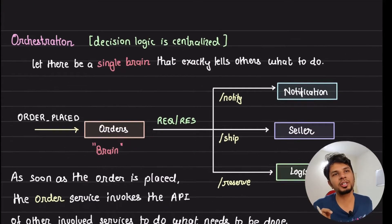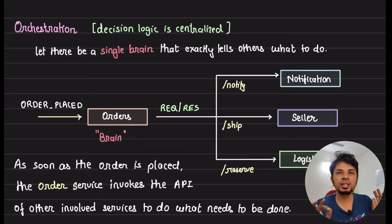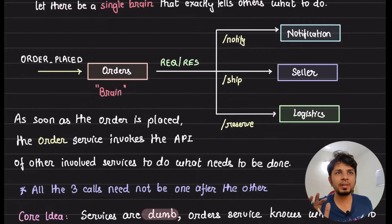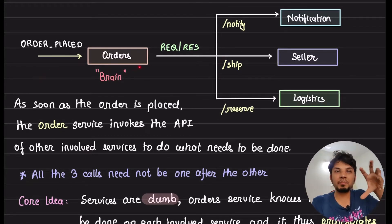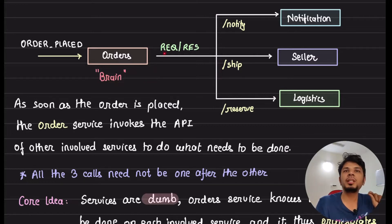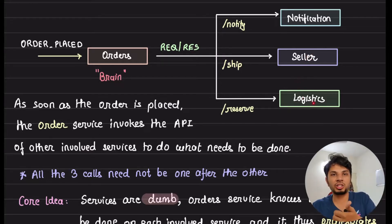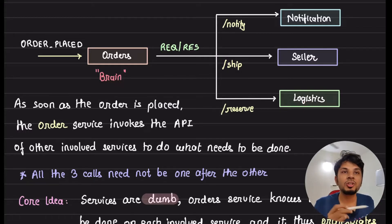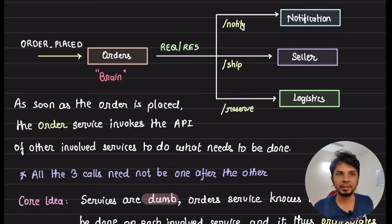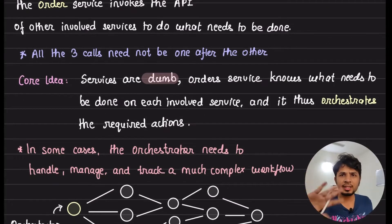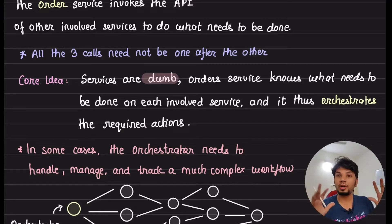Let's take a look at orchestration. The core idea of orchestration is that the decision logic should be centralized — there should be a single brain that tells others exactly what to do. Whenever the order service takes the order, it becomes the coordinator. It would invoke the API of the notification service to send an email, invoke the seller service to keep the shipment ready, and contact the logistic service to assign a delivery partner.